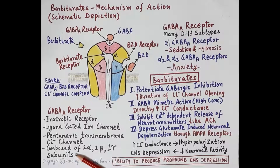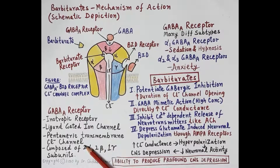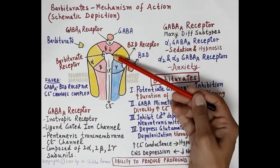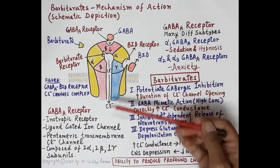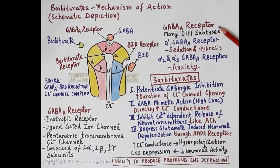Characteristic features of the GABA-A receptor: it is an ionotropic receptor, a ligand-gated ion channel, a pentameric transmembrane chloride channel composed of 2 alpha, 2 beta, and 1 gamma subunits enclosing the chloride channel. This GABA-A receptor has many different subtypes, which is very important to understand.